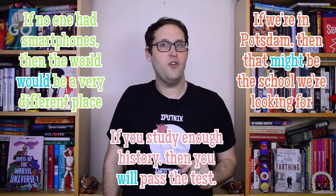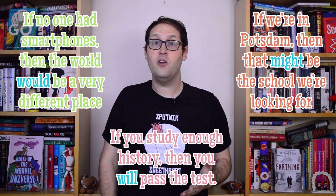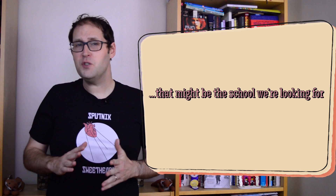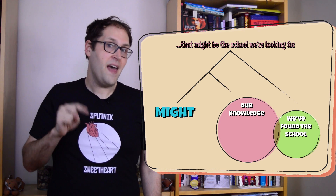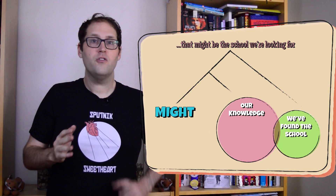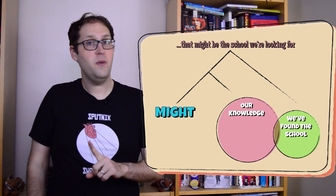There doesn't seem to be any quantifying words like "usually" or "every" in our examples. Except, if we look carefully, we notice that every sentence we've seen so far has some kind of modal word in it — that is, each example is saying something about the possibility or certainty of some idea. And if you remember back to our episode on modal verbs, they can be thought of as another kind of quantifying word, like "usually" or "every." If we zoom in on the second half of our problem sentence — "that might be the school we're looking for" — we can think of its meaning like this: inside the set of possible worlds that represent our knowledge, there's at least one where that building we just found is our school. The word "might" acts like an existential quantifier, and says that at least one world in the first set can also be found in the second.